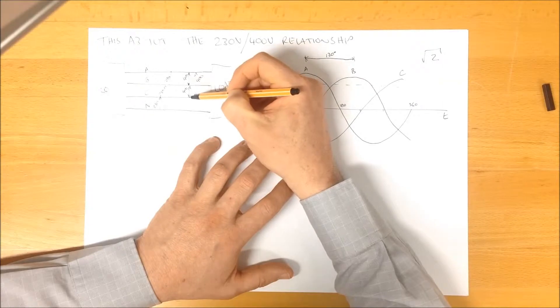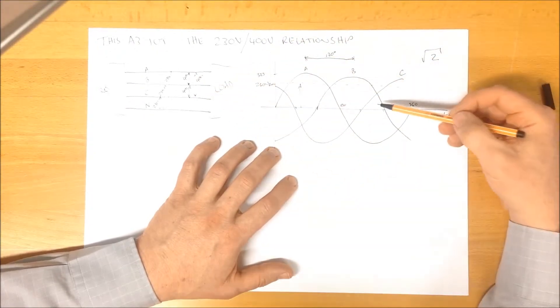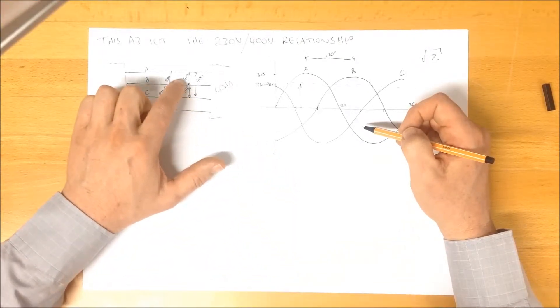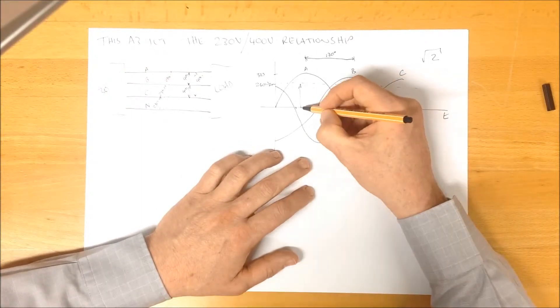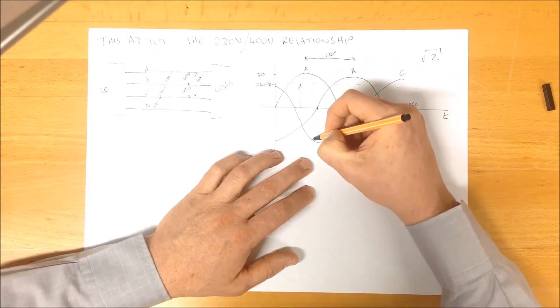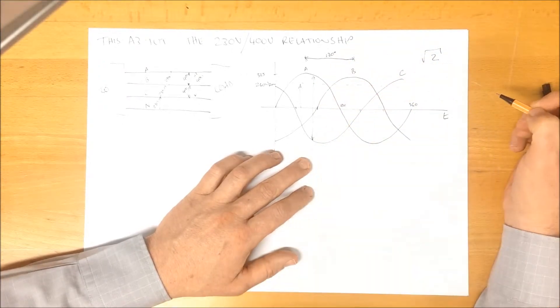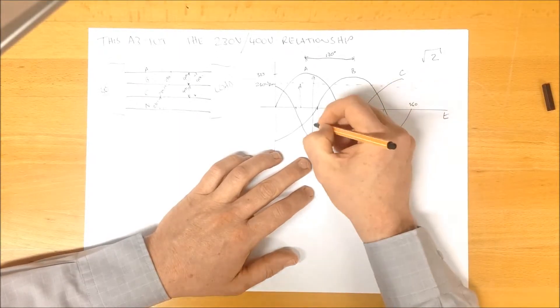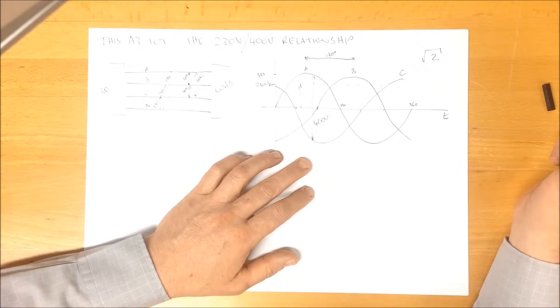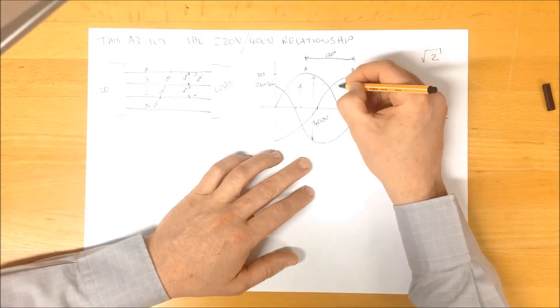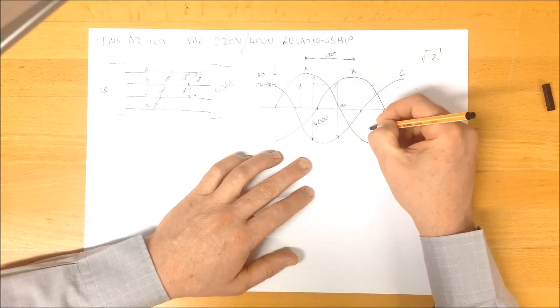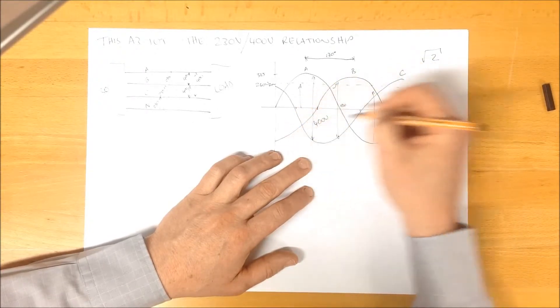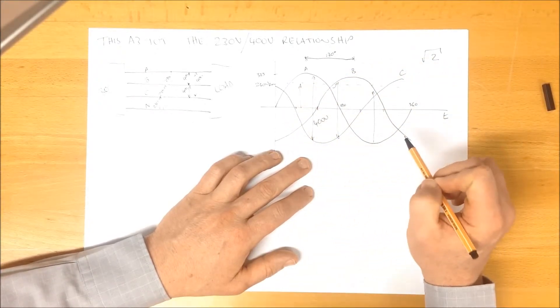We measure 400 volts between here and here and we can see that in this waveform here. If we were to connect one lead of the voltmeter to any of these phases and the other leg to any of the others, we are effectively measuring not here, but here. That is 400 volts. Anywhere along here between two of these, we would be measuring 400 volts.